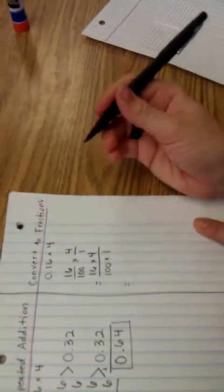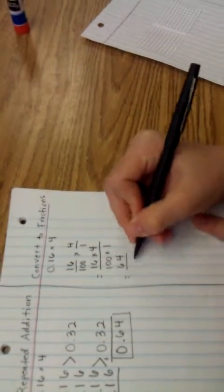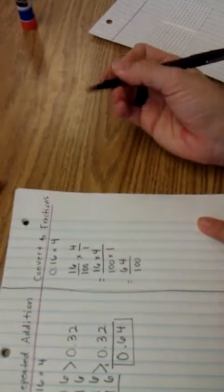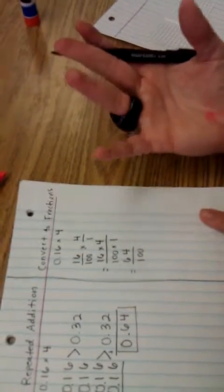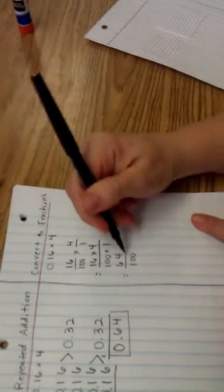Simplifying, 16 times 4 is 64 over 100 times 1 which is 100. 64 hundredths. Normally, I've always had students simplify their fractions.